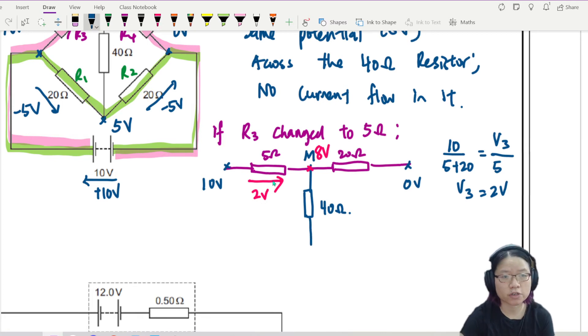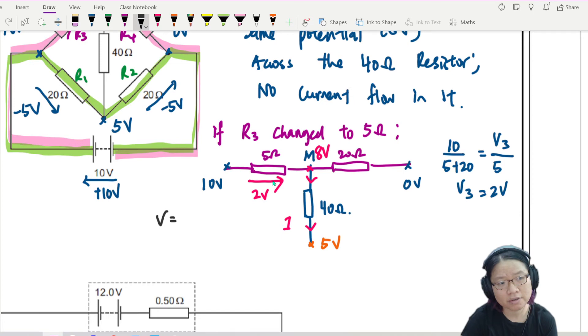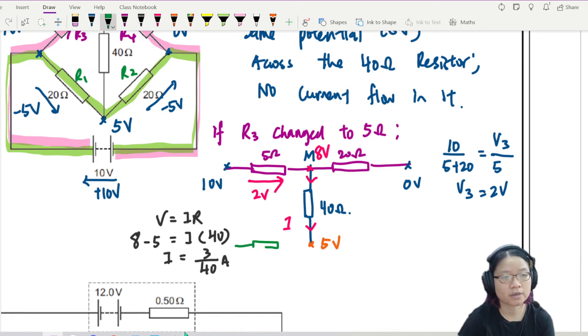So if this is 2 volt, 10 minus 2 means this part here is 8 volt. Remember the bottom part of this 40 ohm is 5 volt because I didn't change the bottom part. So will there be current flow? Yes. Where would the current flow? From high potential 8 volt to low potential 5 volt. Miss, can we calculate I? Can. You can use V equal to IR to find I where V is the potential difference. So the difference here is 8 minus 5 is equal to I times 40.